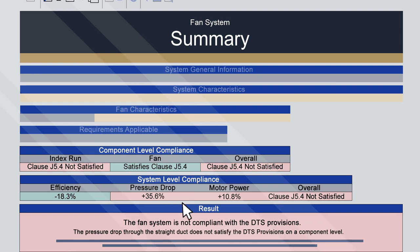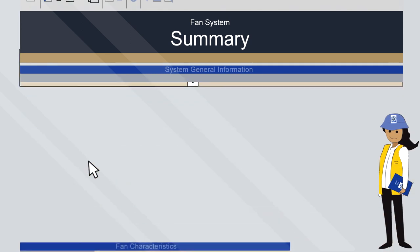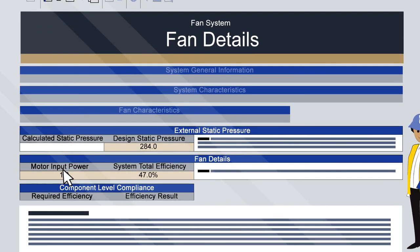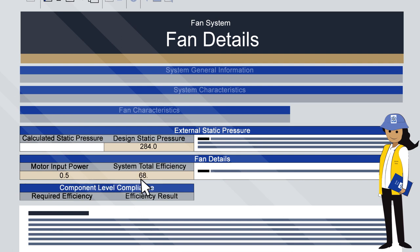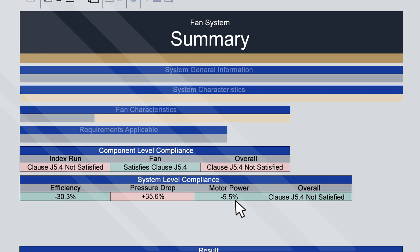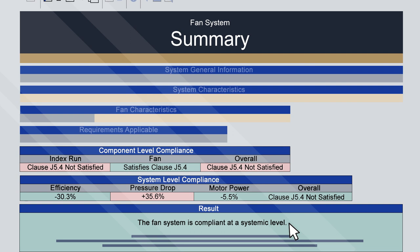Suggested ways to achieve this are shown in the results section. Alternatively, a different assessment method could be considered. Let's look at improving the energy efficiency with a more efficient fan, or changing the specifications of the ducts to provide a system that satisfies Clause J5.4. Using a different fan: first, update the information on the Summary sheet to specify a centrifugal backward curved fan. Returning to the Fan Details sheet, update the motor input power and system efficiency. Returning to the Summary sheet, it now shows the efficiency of this new fan is sufficient to offset the pressure drop of the index run, and reduces the required motor power to an appropriate level. Therefore, the fan system now satisfies Clause J5.4 at a system level.